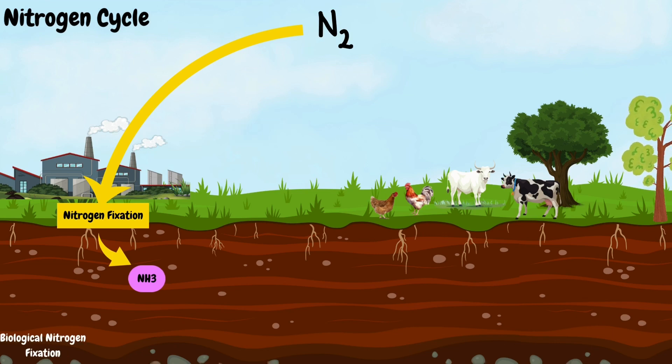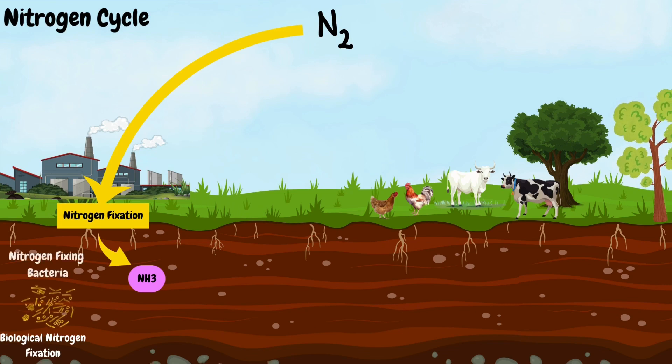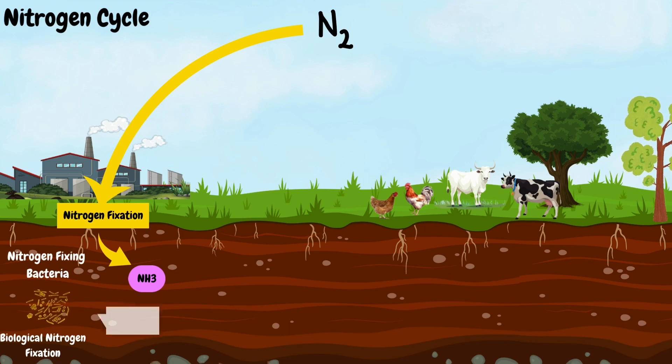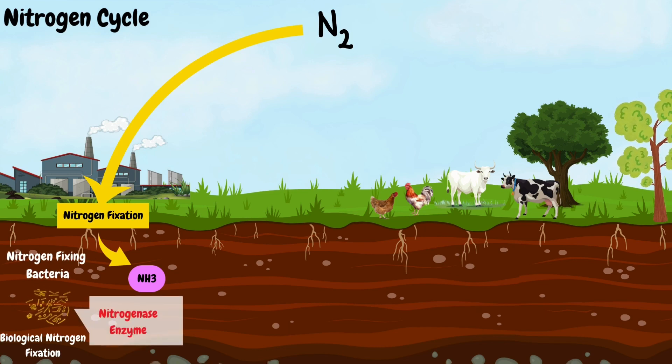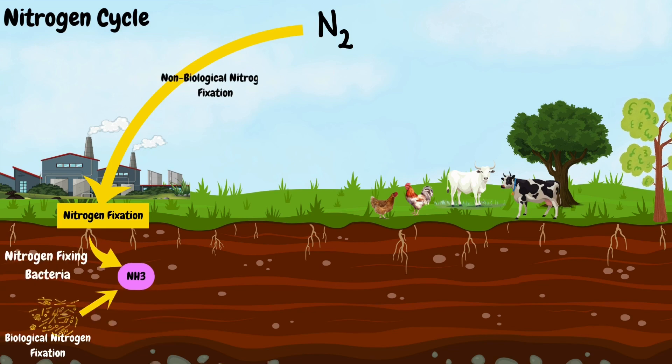Biological nitrogen fixation is carried out by certain bacteria known as nitrogen-fixing bacteria. These bacteria possess nitrogenase enzymes that convert atmospheric nitrogen to ammonia. Non-biological nitrogen fixation occurs through human activities such as industrial processes and combustion.